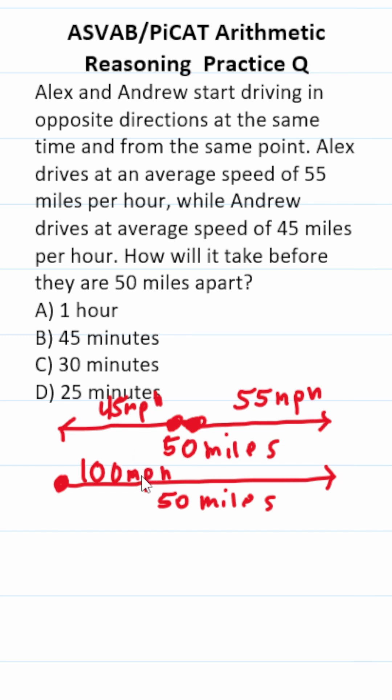We can use an equivalent scenario to figure this one out. Let's say we have another person covering the same 50 miles, albeit at a combined rate of 45 plus 55 or 100 miles per hour. This enables us to use the distance formula much more easily.